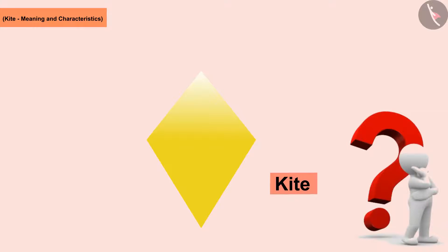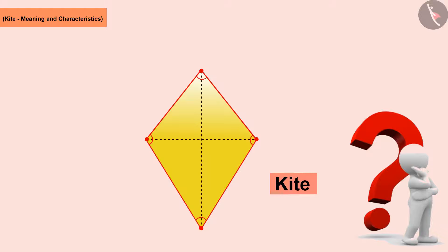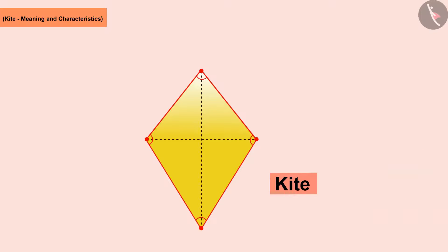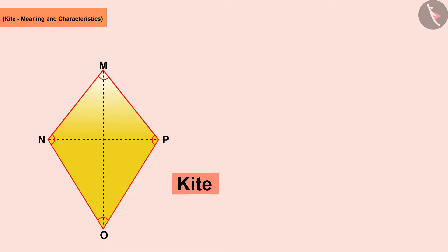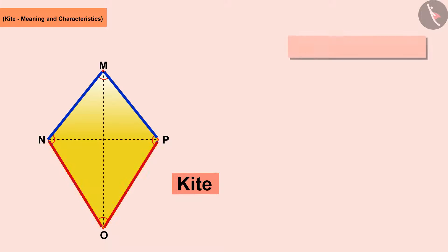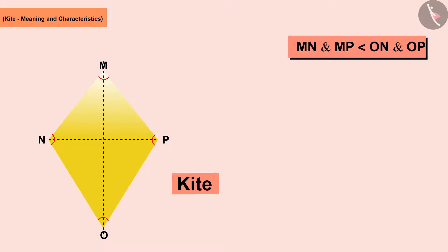Naming the vertices M, N, O and P, the pair of sides MN and MP is smaller than the other sides ON and OP. The two diagonals MO and NP intersect at point X. If you fold this kite with respect to diagonal NP, you can see that triangle MNP does not completely cover triangle NOP — the two triangles are not congruent.